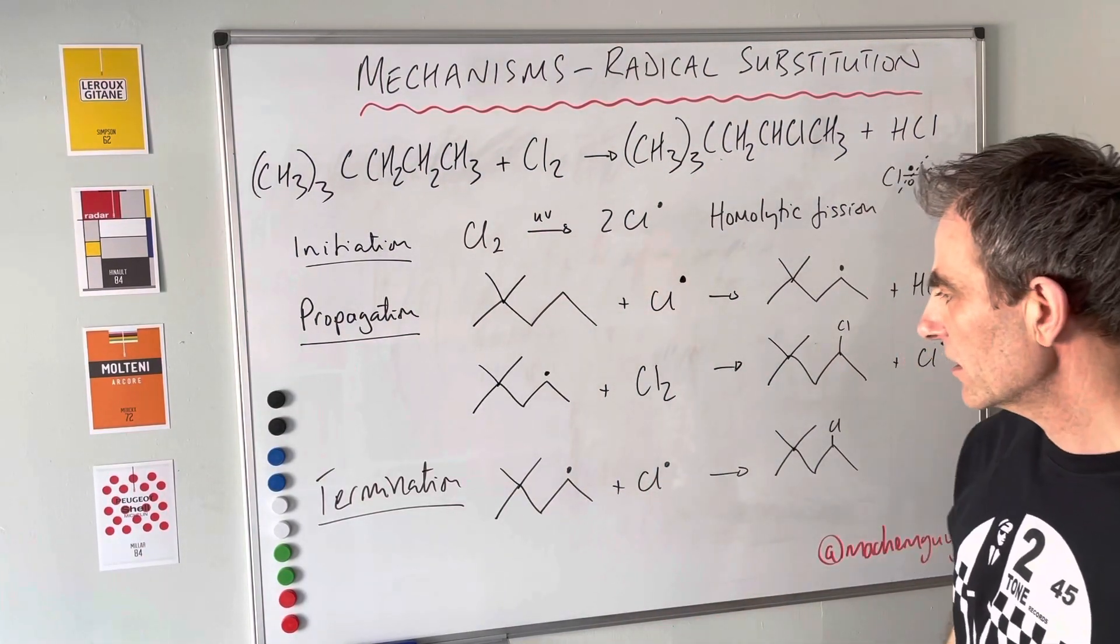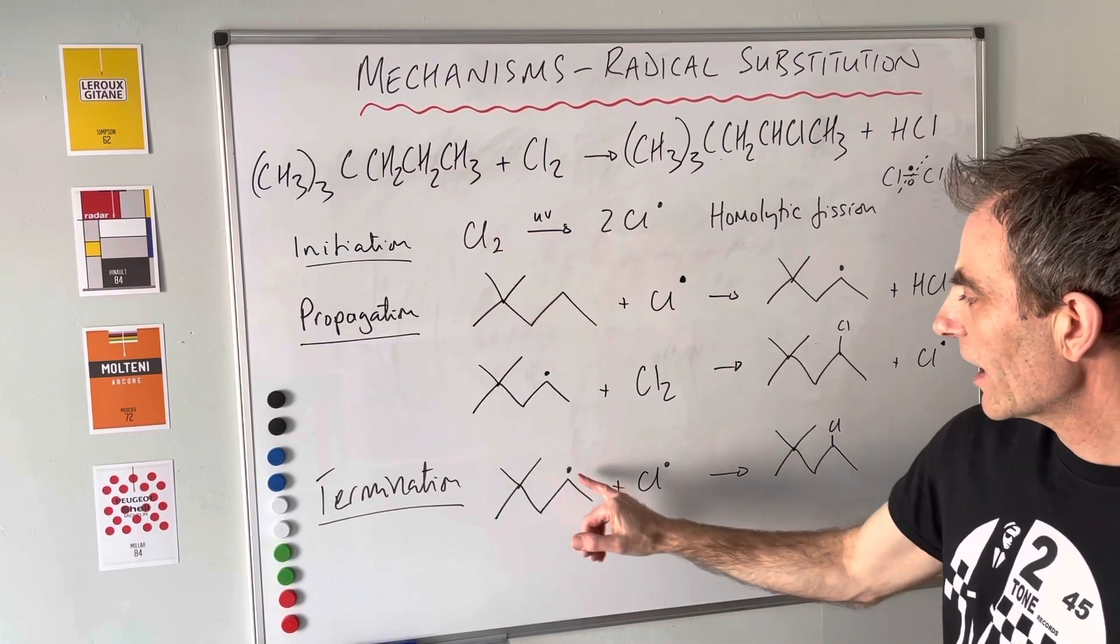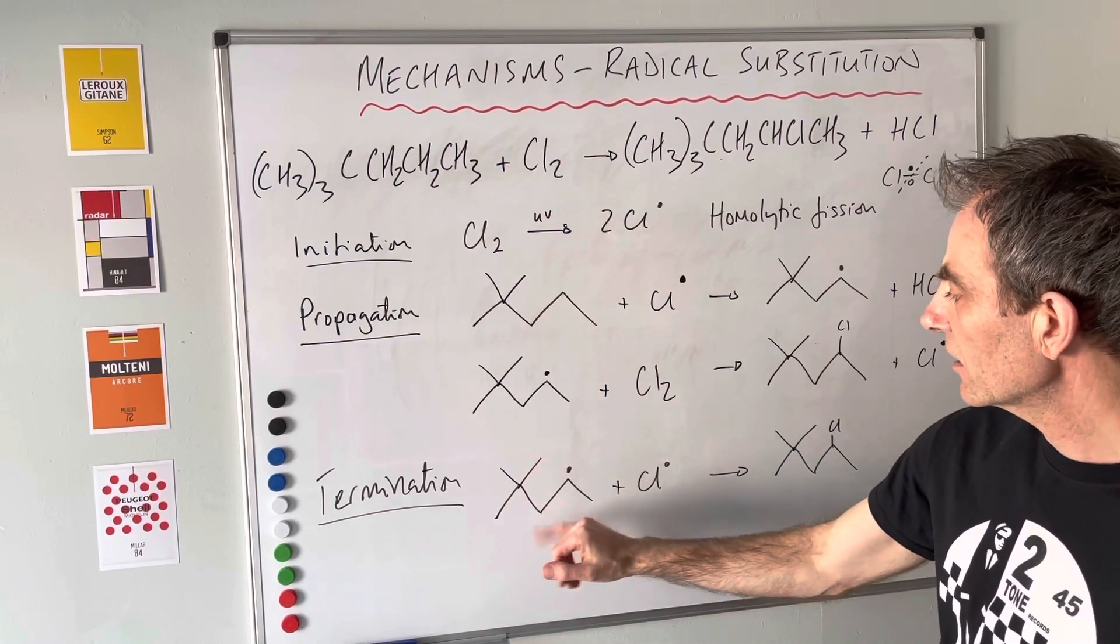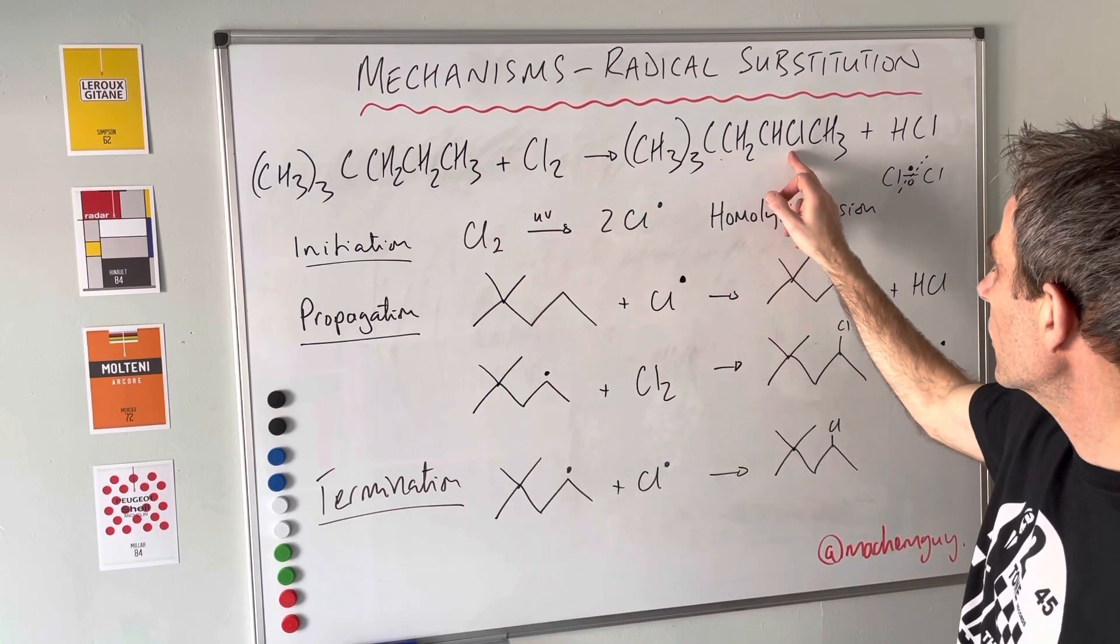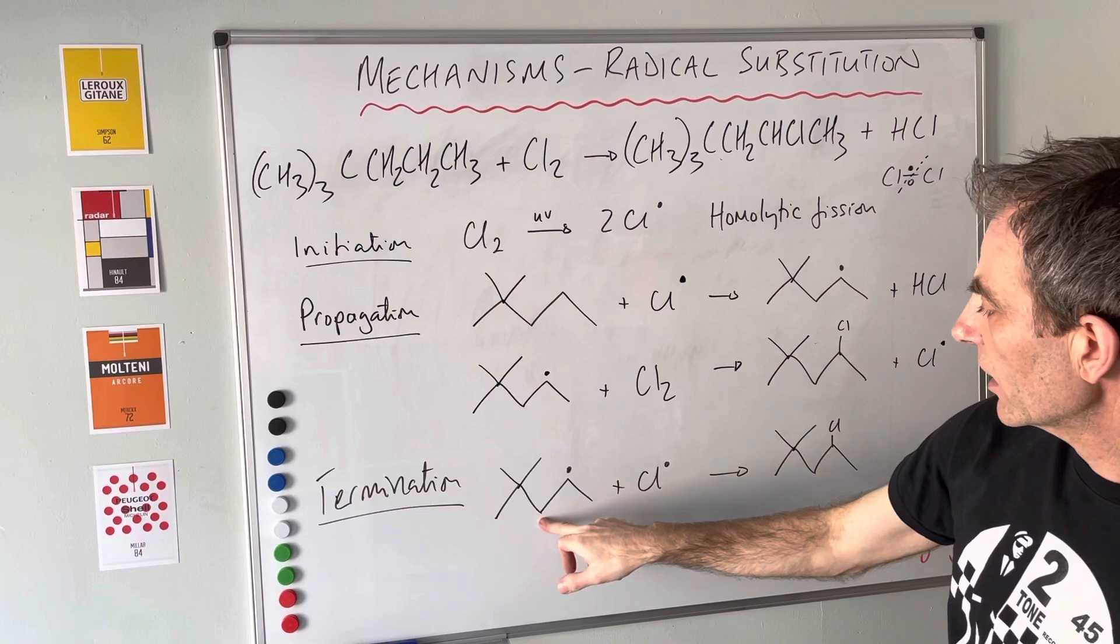The other thing is substitution can occur anywhere on the carbon chain. It wouldn't just occur on that carbon there—it could go on the end there, it could go here, and so on.